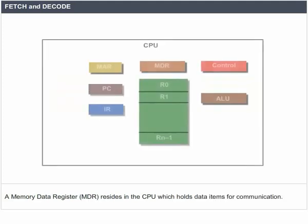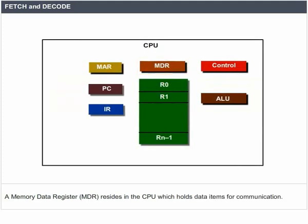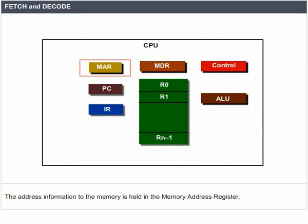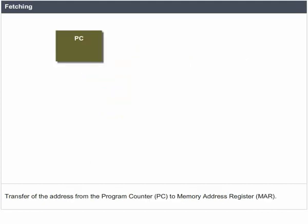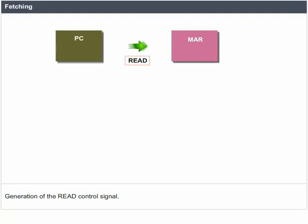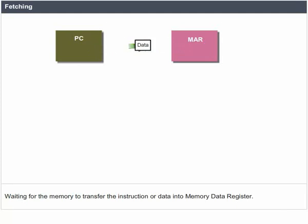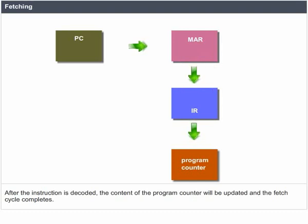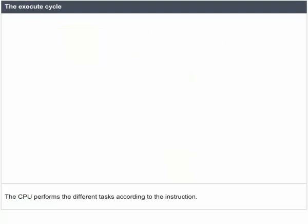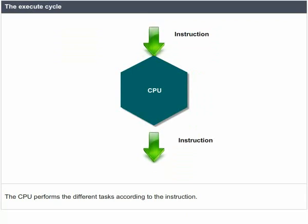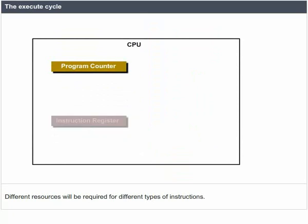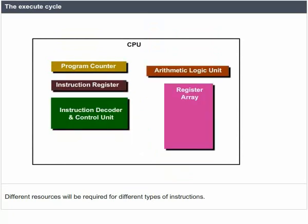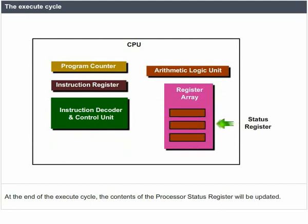A memory data register (MDR) resides in the CPU and holds data items for communication. Address information to the memory is held in the memory address register (MAR). Fetching involves transferring the address from the program counter PC to the MAR, generating a read control signal, and waiting for memory to transfer the instruction into the MDR. The instruction is then stored temporarily in the instruction register for decoding. After decoding, the PC is updated and the fetch cycle completes. During the execute cycle, the CPU performs tasks according to the instruction, and at its end the processor status register is updated.